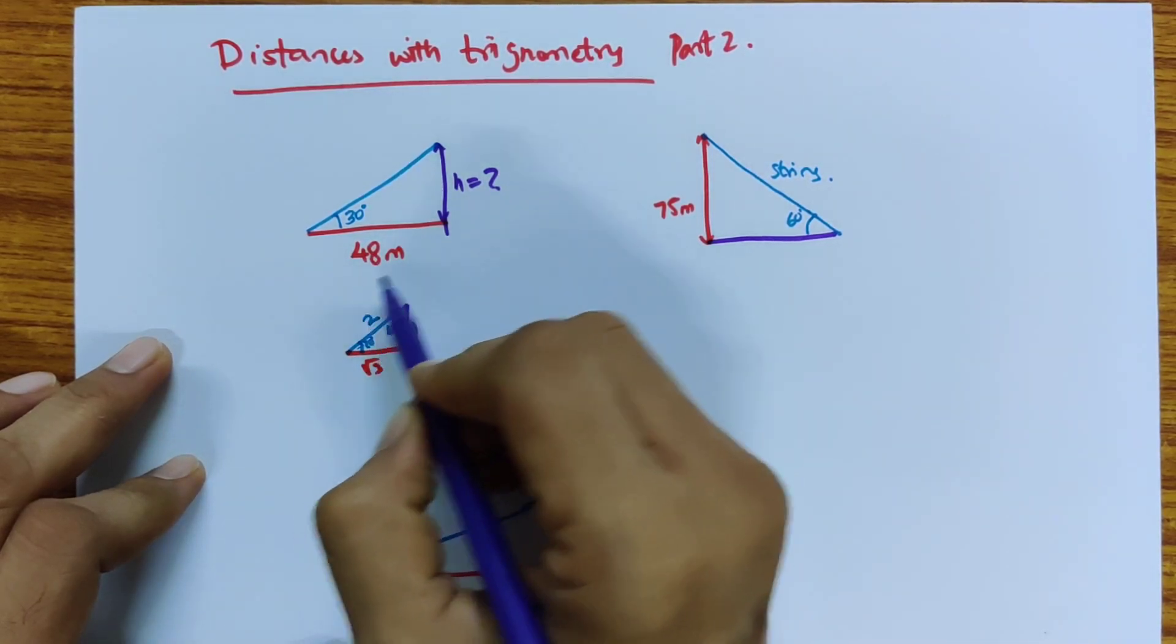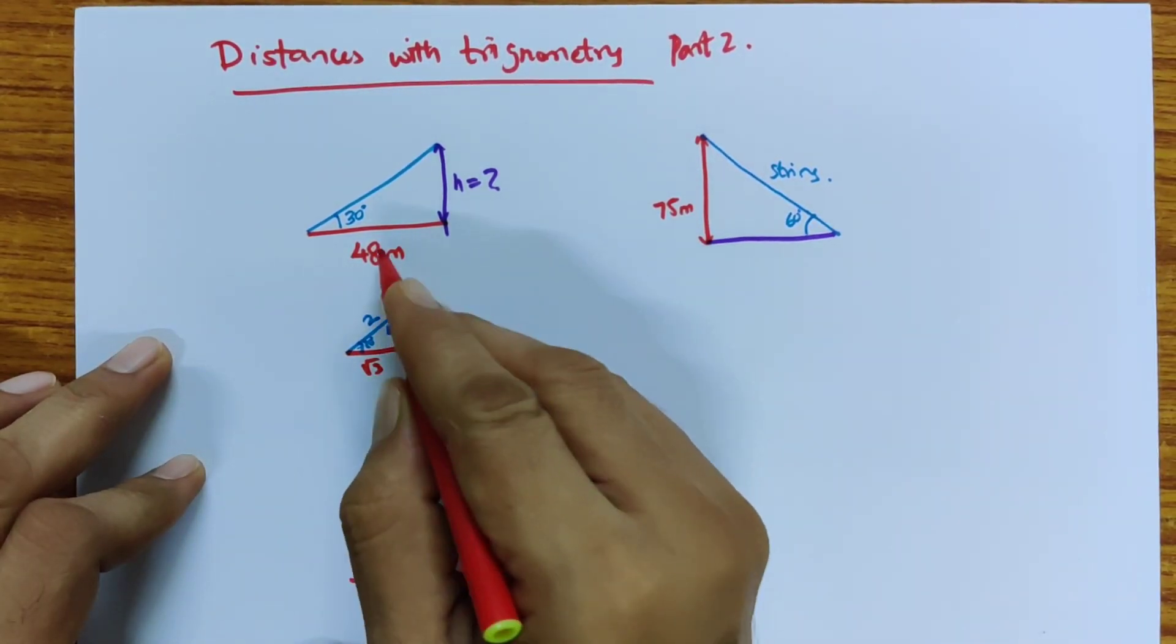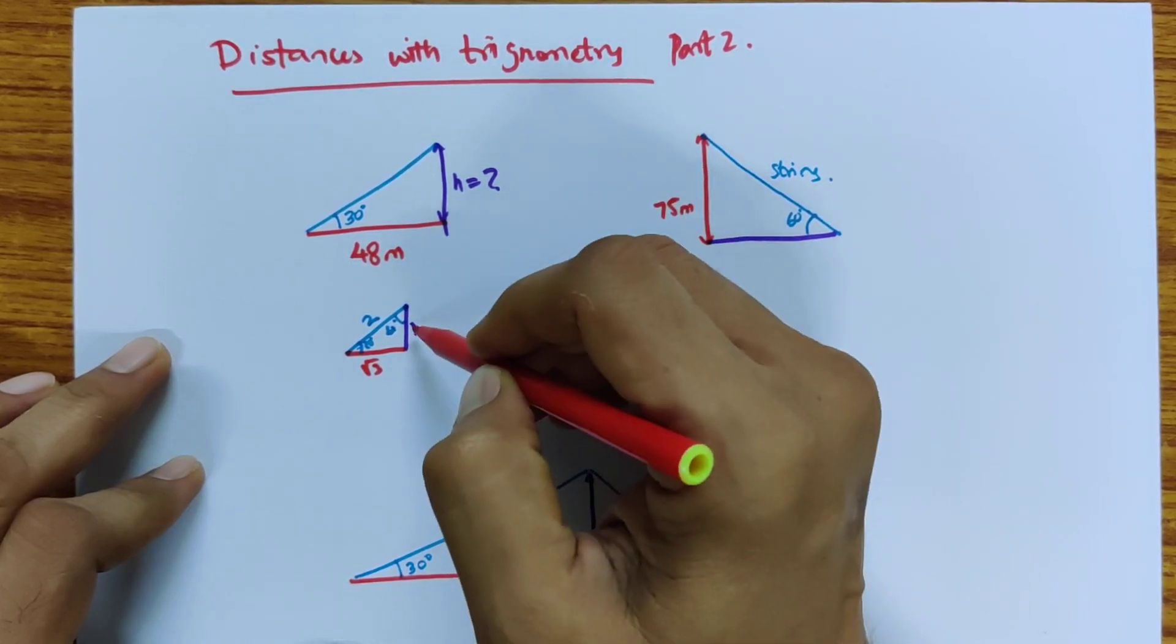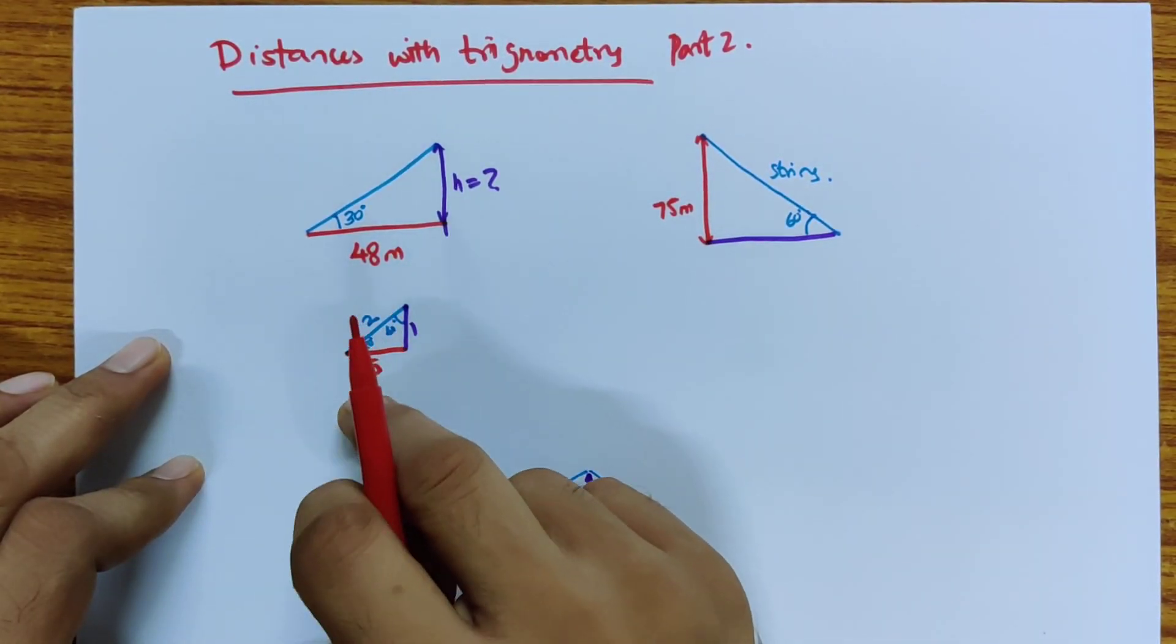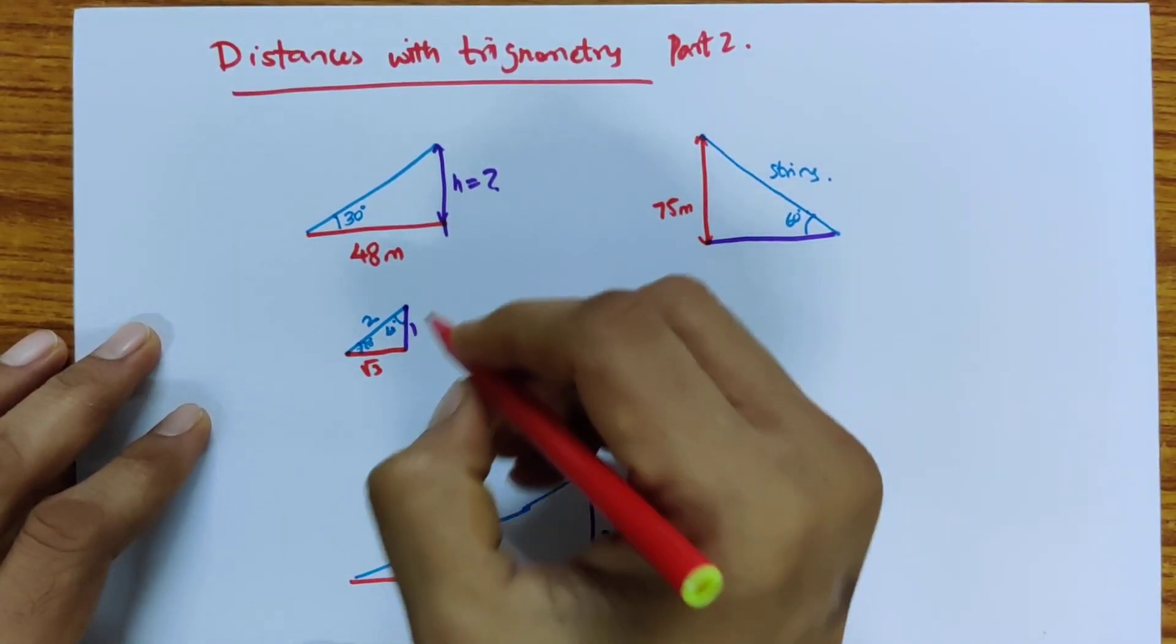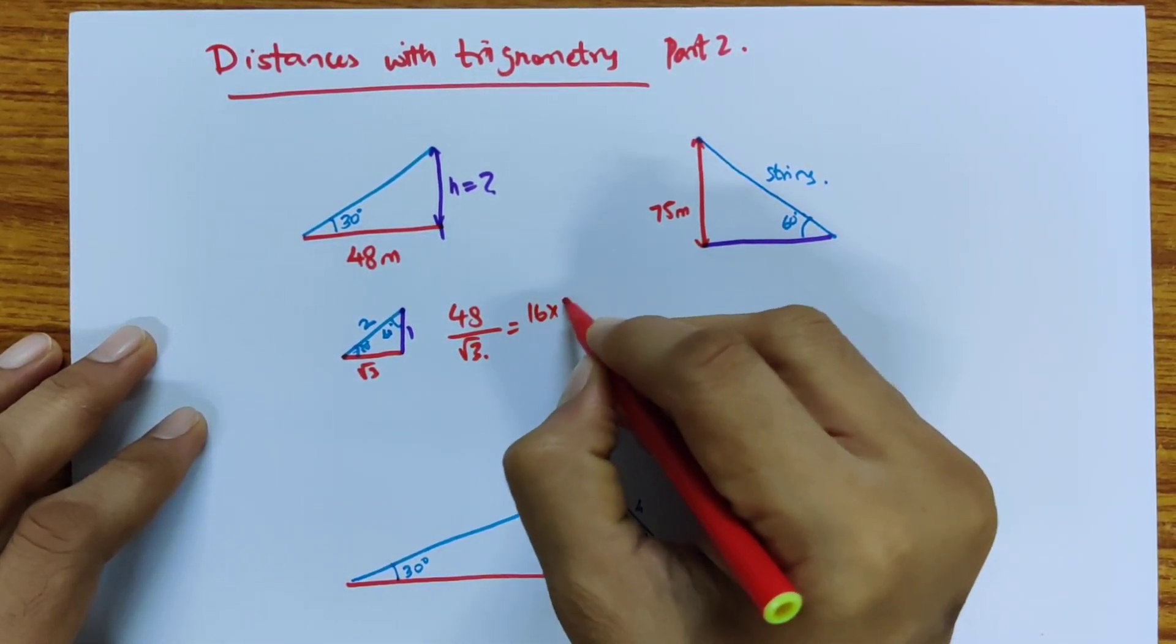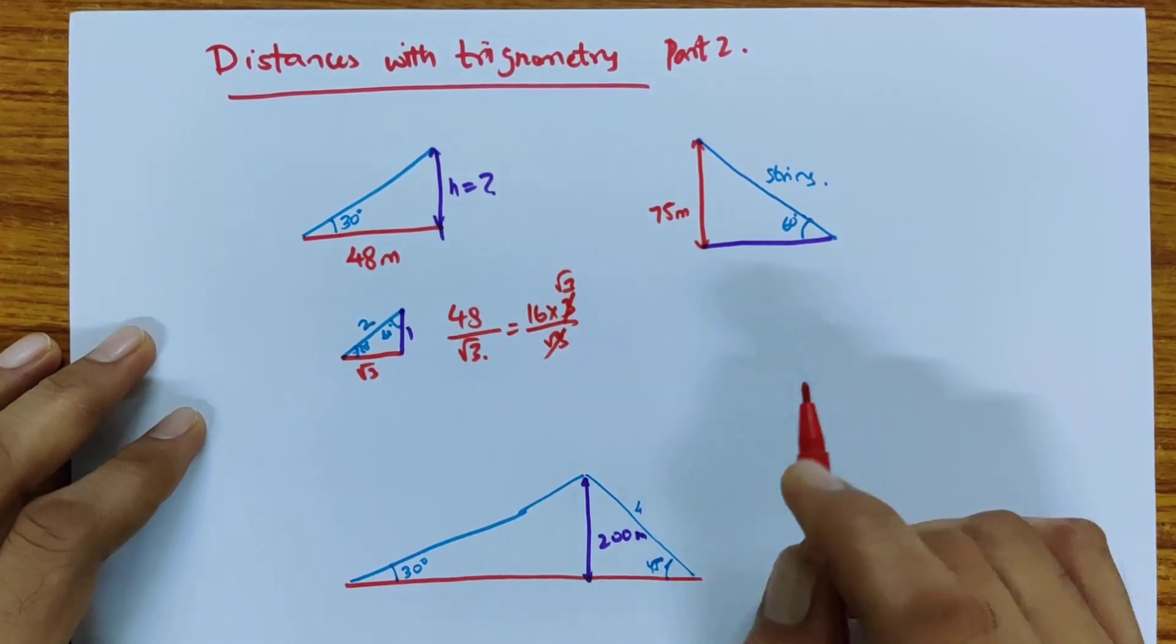So here I just divide 48 by root 3, that's it, because I want 48 here. I actually have root 3 here. If it was a simpler question where this was a height and I needed this distance, I would have multiplied by root 3. This is 1, this is root 3. If I have a distance and I want this, I need to divide by root 3. So this is 48 divided by root 3. 16 times 3 is 48, so this is 16 times 3 by root 3. Root 3 will cancel, so 16 times root 3.